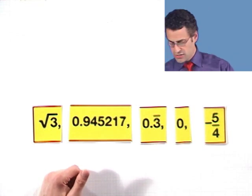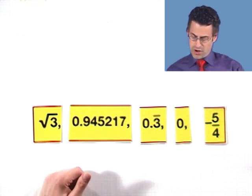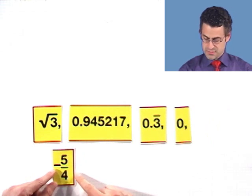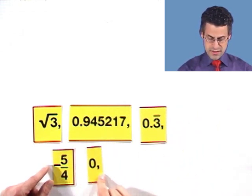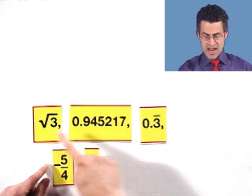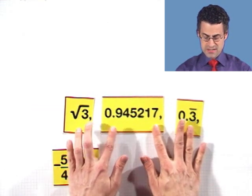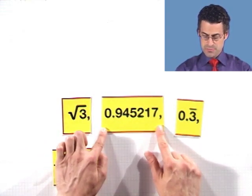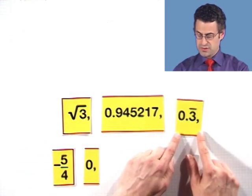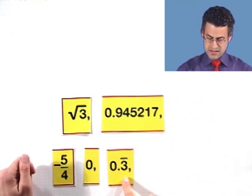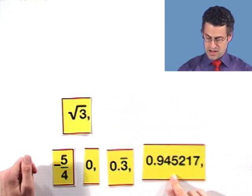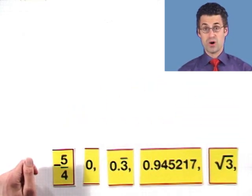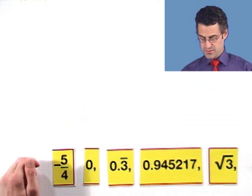So now if we're going to order these things, certainly the negative numbers are the smallest. There's only 1, so we have negative 5 fourths. Then we've got 0, because 0 is smaller than all the positive numbers. This is between 1 and 2, this is just a little teeny bit under 1, and this is around 0.3. So the 0.3 comes next, then comes the 0.94 stuff, and then comes this mysterious number that we know is bigger than 1.